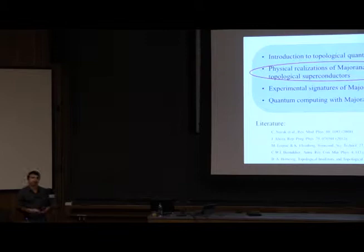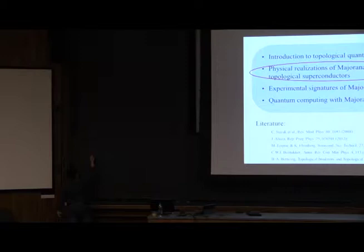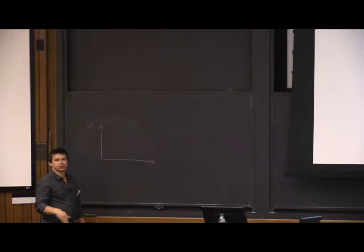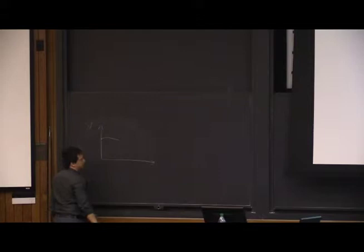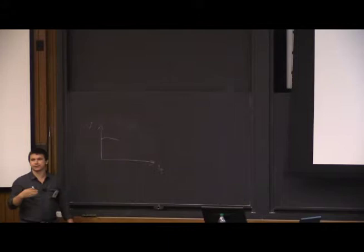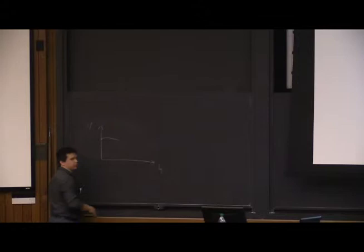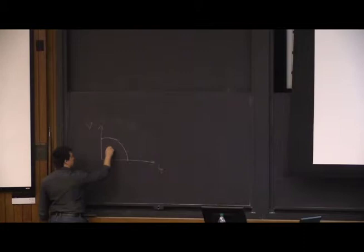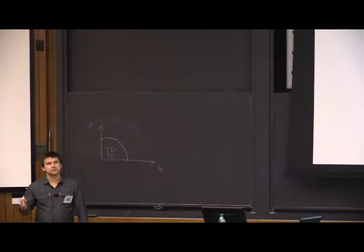What I showed yesterday is that this topological phase will be stable in some parameter space. This axis describes the strength of interactions, parameterized by K, and as long as interactions are not strongly repulsive, the topological phase is stable. This axis describes disorder, labeled 1/τ where τ is the scattering time, and as long as the scattering time is not too short, we have a topological phase. There is a finite, well-defined region of stability, so we should expect to be able to realize this phase in realistic experiments.